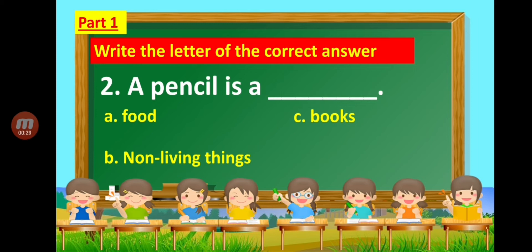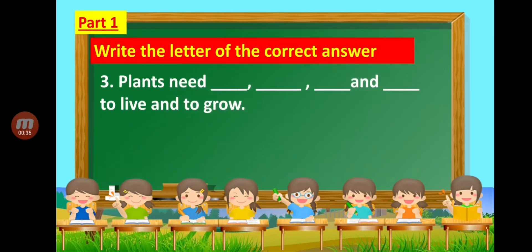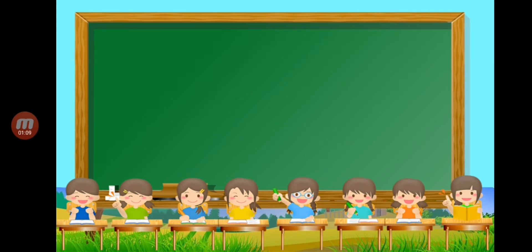Number 3: Plants need blank, blank, blank, blank, and blank to live and to grow. The choices are: A — car, B — bed, and C — water, air, sunlight, soil.